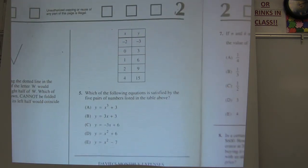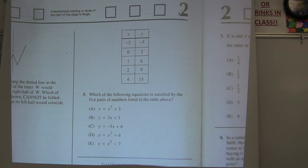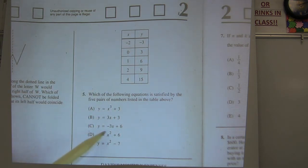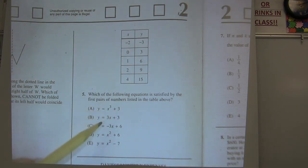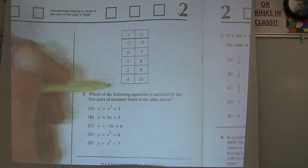Okay, number 5, given a chart. Got some XY values and it says which of the following equations satisfies the five pairs of numbers listed above? Well, this one, if you had no clue how to do this, this is one of the ones where you can just plug in the choices and figure out which one is going to satisfy this. Everyone can get that. It will take you a lot longer to do it that way, but that's okay.